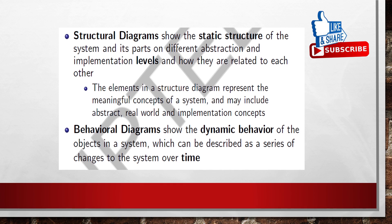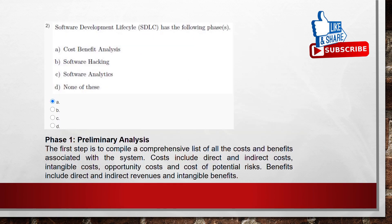The second question: software development lifecycle has which of the following phases? Options are: A) cost benefit analysis, B) software hacking, C) software analytics, D) none of these. According to the SDLC material, in Phase 1, preliminary analysis, the first step is to compile a comprehensive list of all costs and benefits associated with the system. Benefits include direct and indirect revenues and intangible benefits. So the answer is Option A: cost benefit analysis.